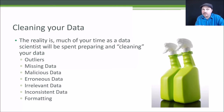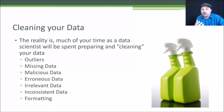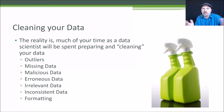Another issue is missing data. What do you do when data simply isn't there? In a weblog, you might have a referrer field or you might not. Do you create a new classification for 'missing' or 'not specified'? Or do you throw that line out entirely? You have to think carefully about what the right approach is.